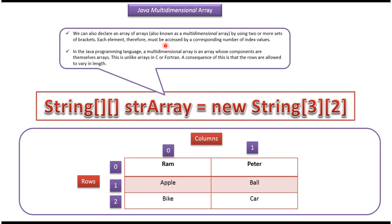Here you can see the definition of a multidimensional array. We can also declare an array of arrays by using two or more sets of brackets. Each element must be accessed by a corresponding number of index values. In the Java programming language, a multidimensional array is an array whose components are themselves arrays.